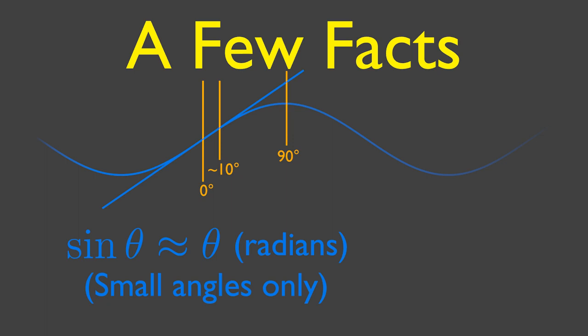First, let's start with a few facts that we will need to use. Fact one, whenever we have the sine of an angle, if the angle stays small, under 10 degrees is a good place to be, the sine is almost the same as the angle by itself in radians.